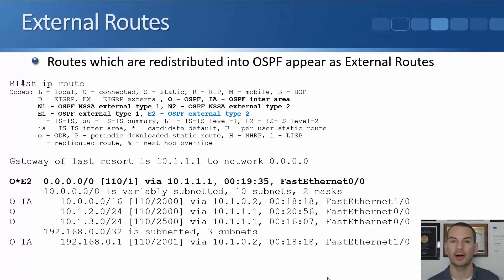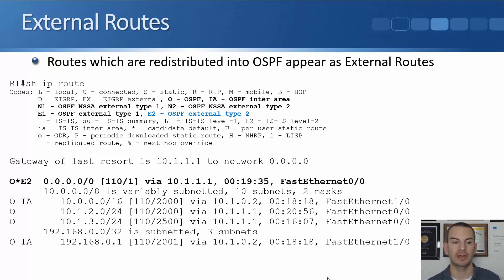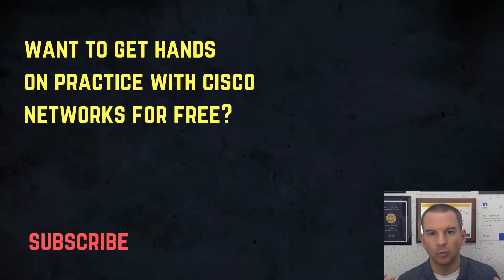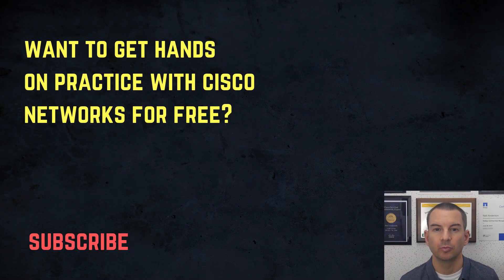Redistributed routes show up as external routes. An external route does not mean it's outside the enterprise or organization — it literally means it was redistributed into OSPF. In the routing table, this shows up as type O E1 or E2 for an external route. So O means intra-area route with the destination in the same area; IA is an inter-area route from another area learned by an ABR; and E2 means it was redistributed into OSPF.